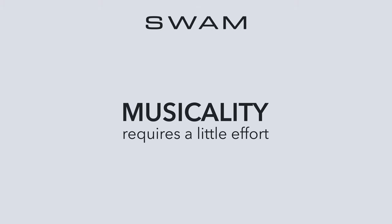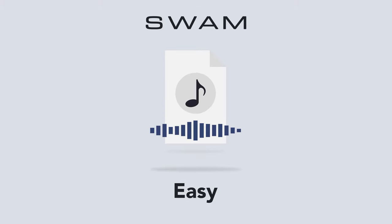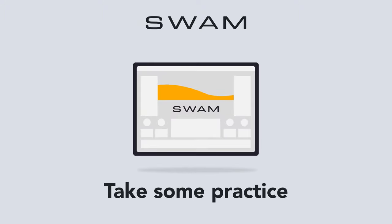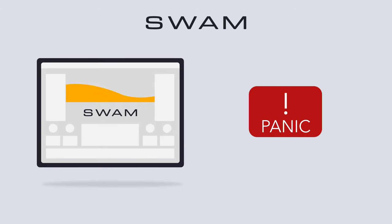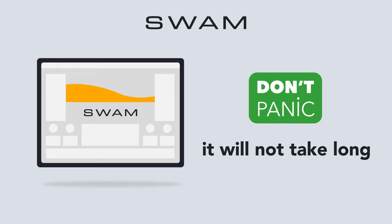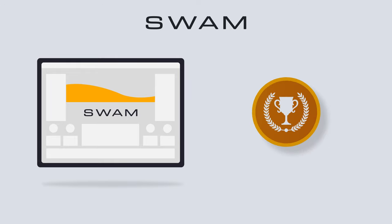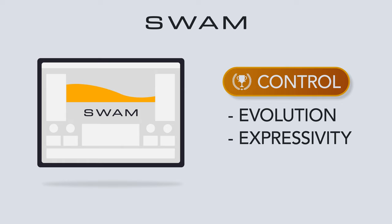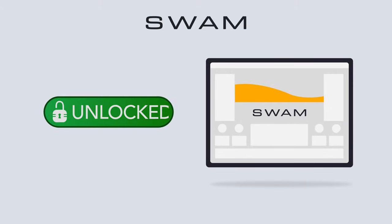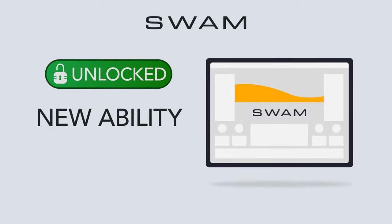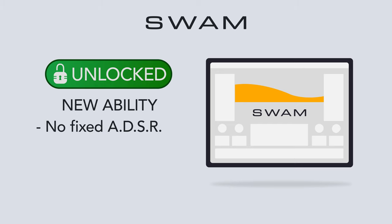Now, musicality doesn't come free. While triggering a sample is easy, the payoff is small. Learning to be expressive on a truly performable instrument like a SWAM instrument does take some practice. SWAM instruments don't require the years-of-study acoustic instruments demand. But still, you'll have to learn how to control the sound evolution and expressivity of your SWAM instrument in real time or in post-production. The payoff of this learning curve is the ability to play any musical phrase without the constraints of a fixed ADSR or canned articulation.